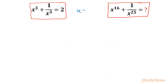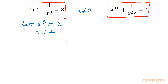So x cannot be 0. Now I will consider a substitution. Let x³ = a. So I will be writing a + 1/a = 2. Since x is nonzero, a is also nonzero.